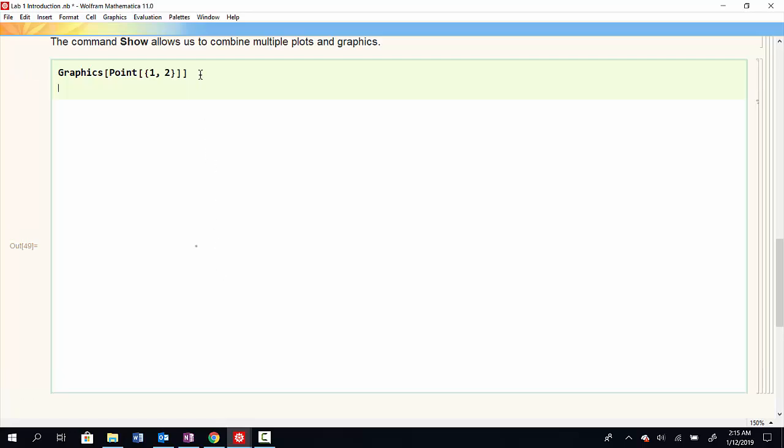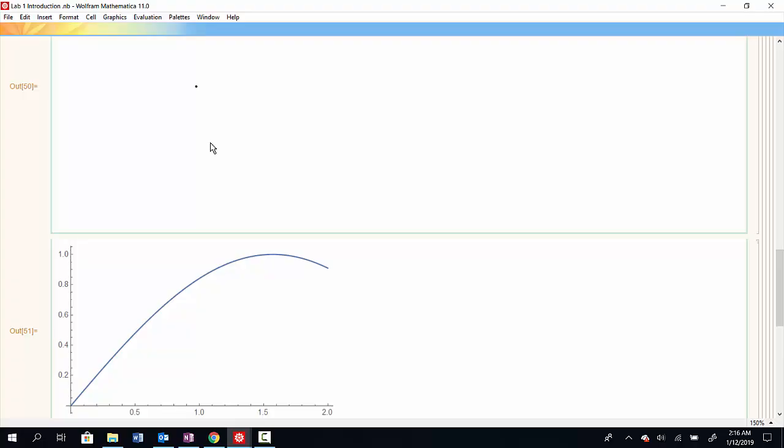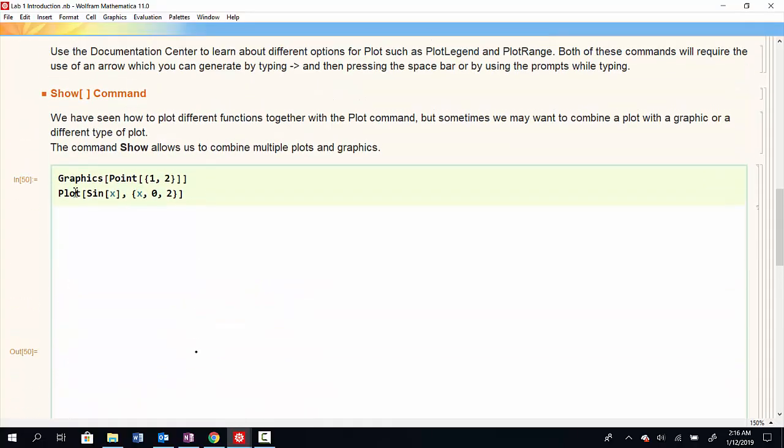And so if I also have a second object, which will be the plot, maybe the plot of sine of x as x goes from, let's say, 0 to 2. Now I have two different objects - I have a point and I have a plot. Well, I'd like to show these two items together. So what I can do is use the show command. The arguments of the show are the objects I want to combine. So the first argument of show will be my first graphical object. I'll put a comma after that and then I'll have my second graphical object. And then lastly, I'll put my closing bracket here to end the show command.